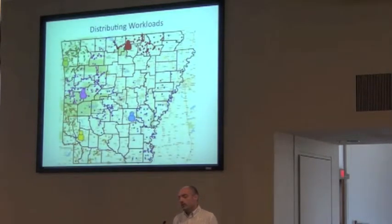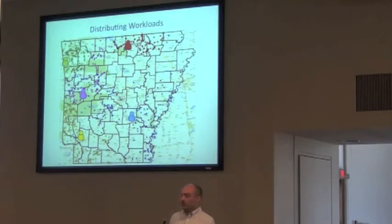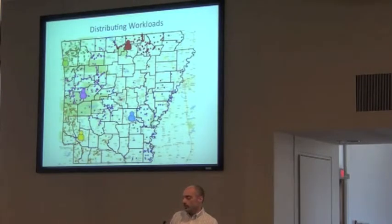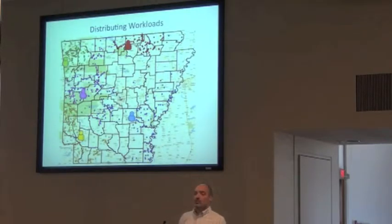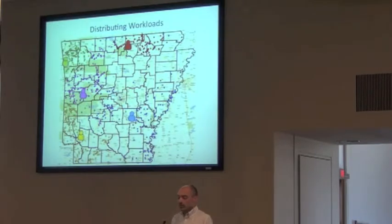Another thing is the ability to distribute workloads and manage how that's done. Within the collaborative georeferencing system, the idea would be to take an area — for example, in a student project where we had volunteer students working on fishes within Arkansas, we divided up the state into a number of regions, assigned those different regions to each student, and then later we were able to come back and look at the results that each student did.